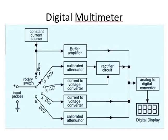When the rotary switch is at position 1, it is known for measurement of resistance. The resistance is connected to the input probes and the constant current source drives a current through the unknown resistance. This produces a voltage across the resistance directly proportional to the resistance. It is given to the buffer amplifier and then to the analog-to-digital converter. The ADC converts it into an equivalent digital signal, which is displayed on the digital display.